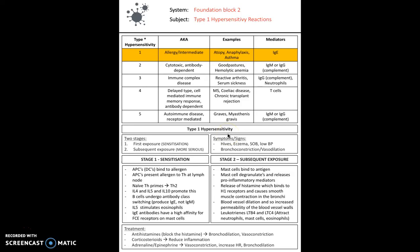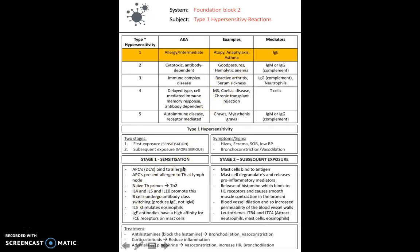In terms of symptoms occurring in a type 1 hypersensitivity reaction, minor symptoms include hives and eczema, but more severe symptoms include shortness of breath, low blood pressure, and edema — these are more associated with anaphylaxis. Stage 1 is sensitization, and you need to know the stages involved. Sensitization is when the allergen enters the body and antigen presenting cells such as dendritic cells bind to the allergen.